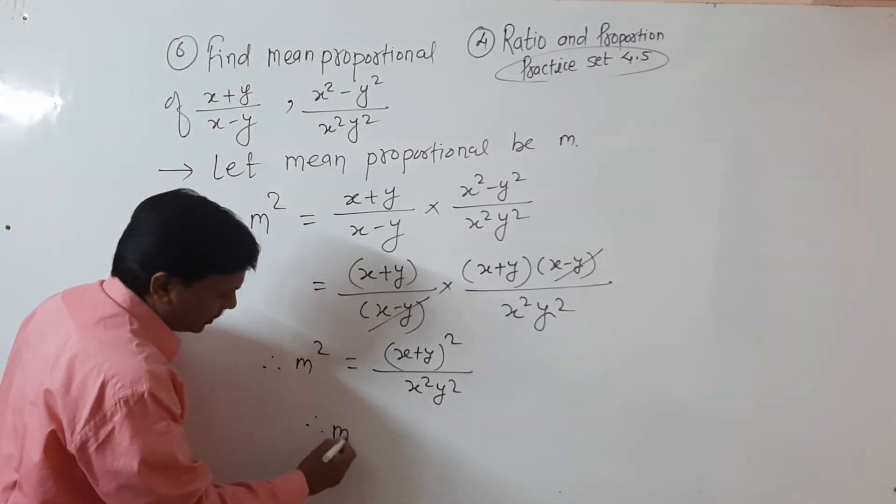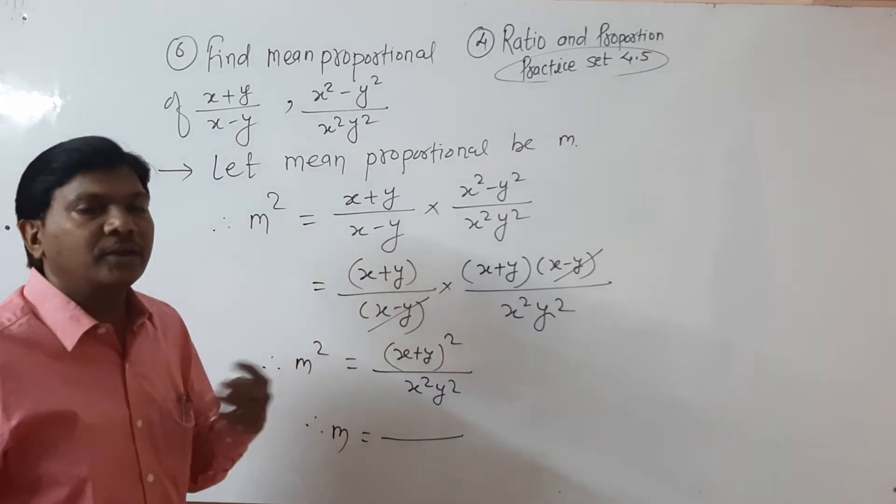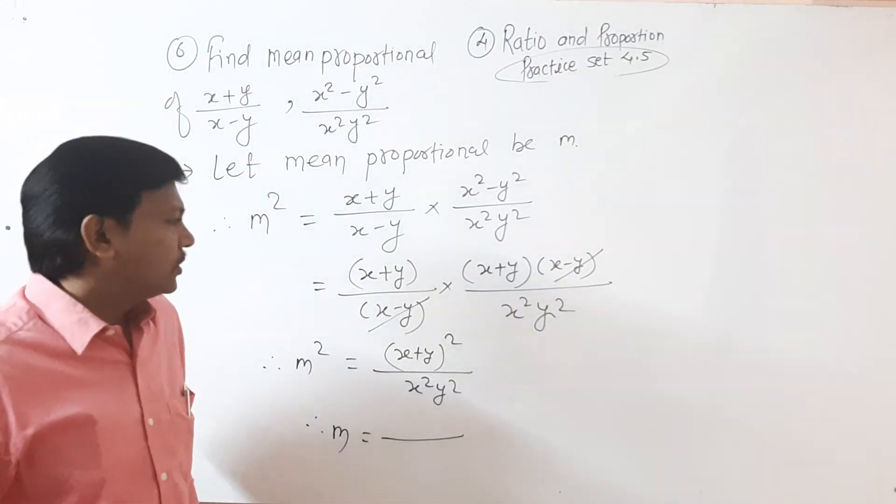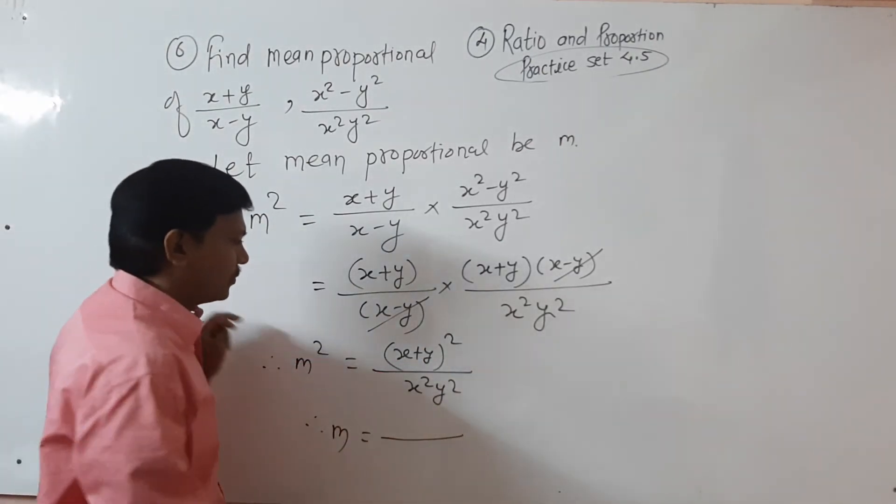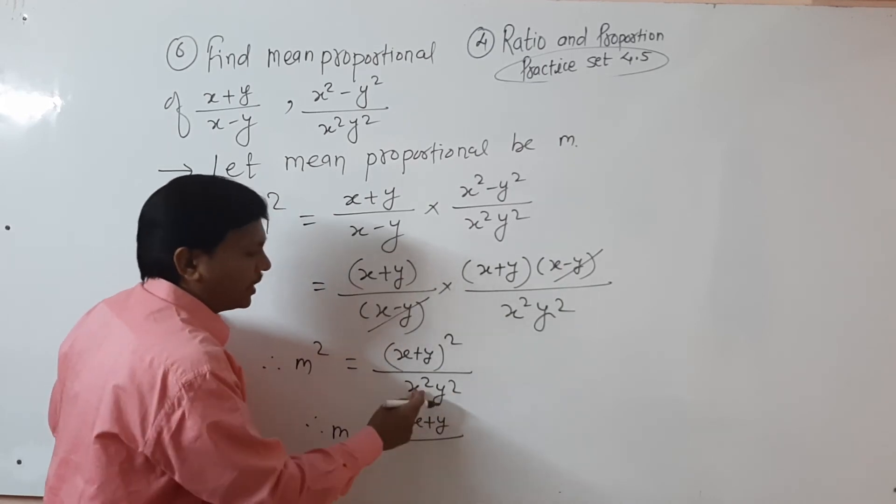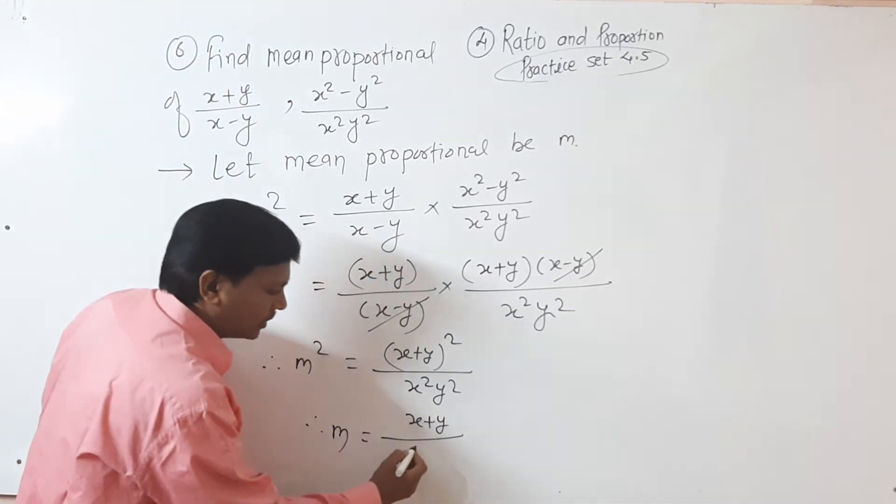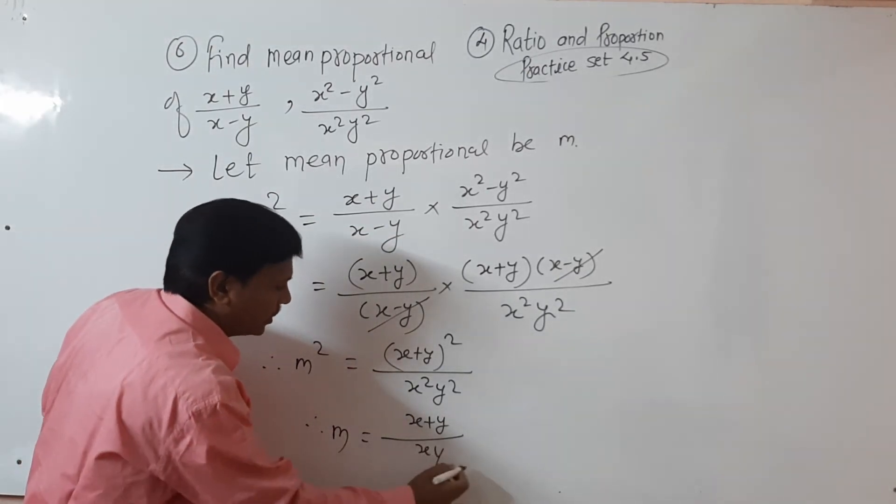We take square root on both sides. When you take square root, (x+y) bracket square - the bracket is given and it is square, so when you take square root it is (x+y). And here x²y², when you take square root it is xy. So m = (x+y)/xy.